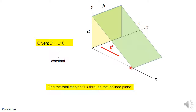This point projects back onto this corner, and this point projects back exactly onto this corner. So do you expect the electric flux through the inclined surface to be the same, bigger, or smaller than the electric flux through the back surface?